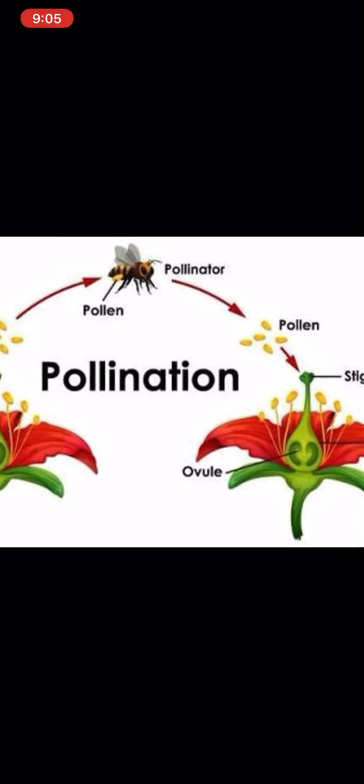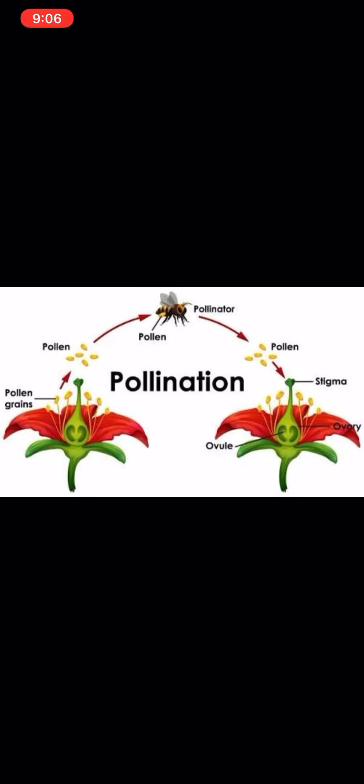जब एक flower का pollen दूसरे flower पे जाता है, तो new plant या new flower reproduce होता है — and this process is known as pollination. और जिसकी वजह से pollination हो रहा है, उसको हम pollinator बोलते हैं. Butterflies and bees and many other small insects are called pollinators. The bees transfer pollen from one flower to another, which helps in the growth of new plants. Flowers cannot transfer their own pollens — small insects like bees and butterflies do that — इसलिए इनको हम pollinators बोलते हैं.